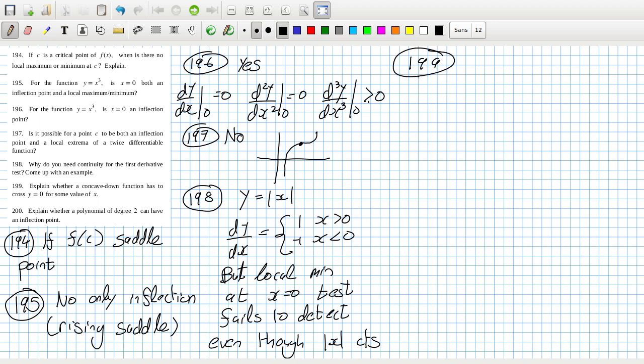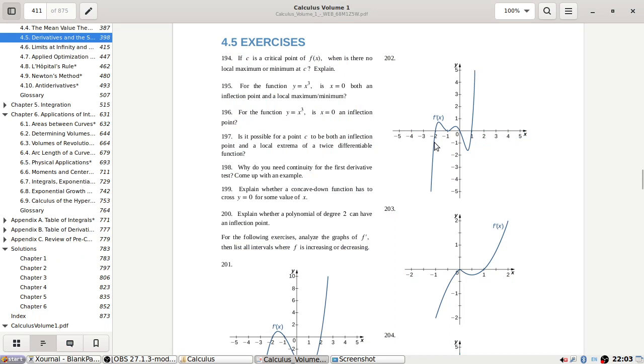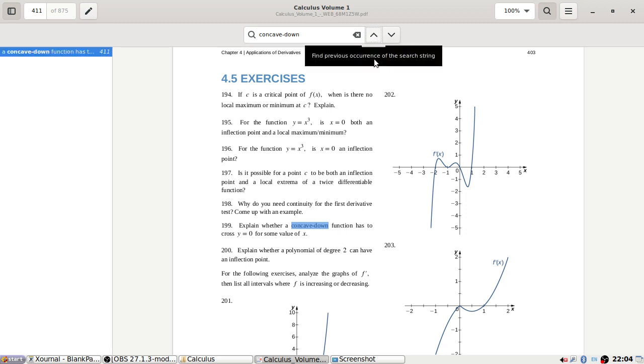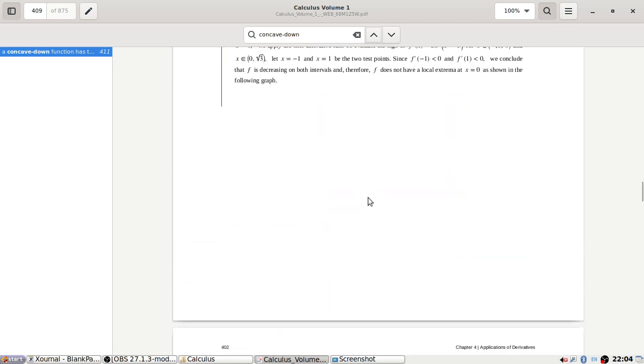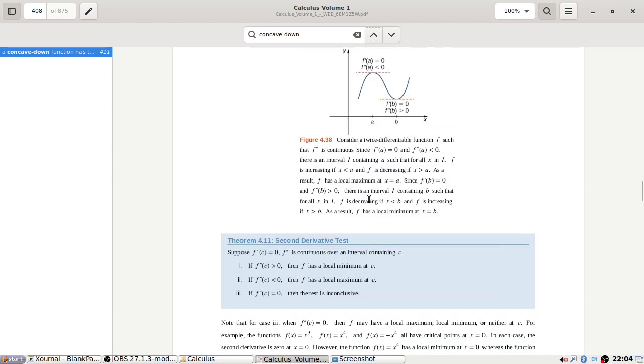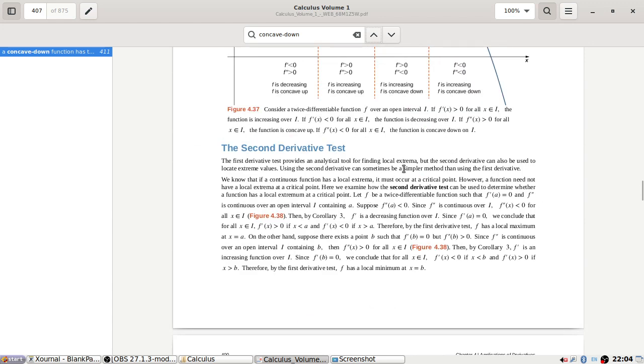199, explain whether a concave down function has to cross y equals zero for some value of x. Now concave down, see I use concave and convex, so I need to check which shape that is. Go search up, go search up.